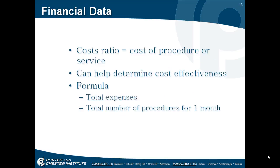The cost ratio is the cost of a procedure or a service. It can help you determine the cost effectiveness of that service. The formula is the total expense of the service divided by the total number of procedures for one month. If your office finds that the expense of doing a procedure is too expensive, they may have to discontinue doing that service.